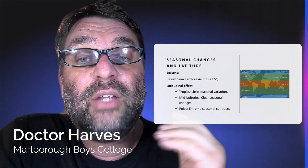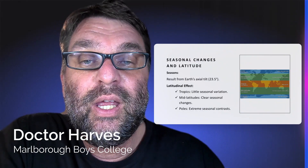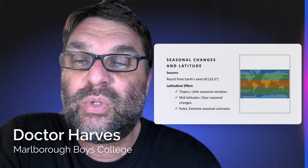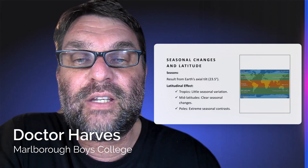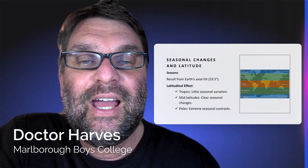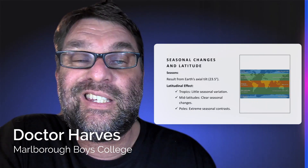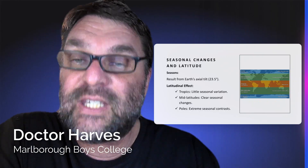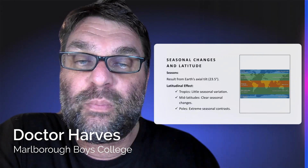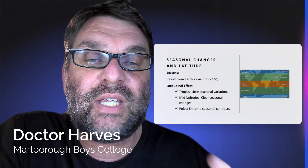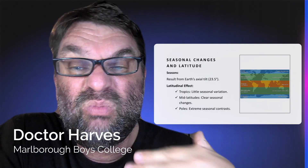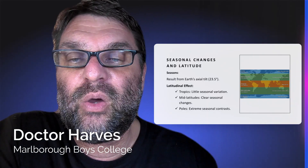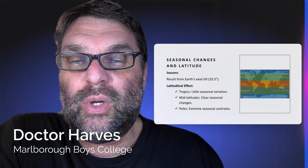To summarize: seasonal changes and latitude — the seasons result from the Earth's axial tilt of 23.5 degrees. The latitudinal effect is that the tropics have little seasonal variation, just dry and wet seasons. Mid-latitudes, like where we are, experience four clear seasons: summer, winter, spring, and autumn. At the poles, there's extreme seasonal contrast — basically 24 hours of darkness during wintertime and 24 hours of sunlight during summer.